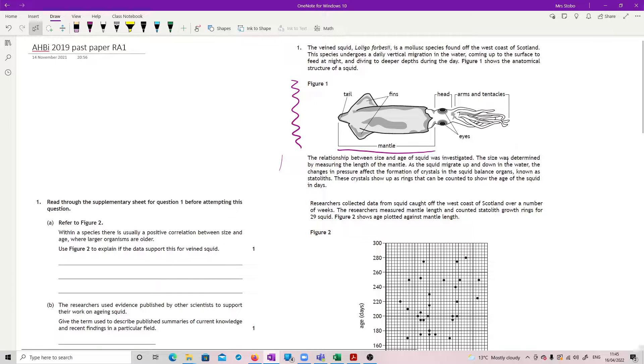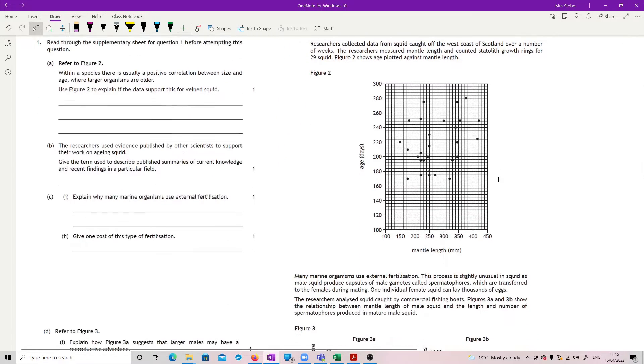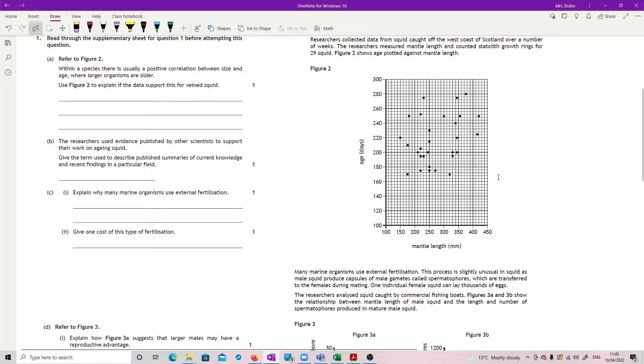As the squid migrate up and down in the water, the changes in pressure affect the formation of crystals in the squid's balance organs. These are known as statoliths. These crystals show up as rings that can be counted to show the age of the squid in days. Researchers collected data from squid caught off the west coast of Scotland over a number of weeks, measuring mantle length and counting the growth rings for 29 squid. And then we've got our plot with the statoliths giving us the age and the mantle length.